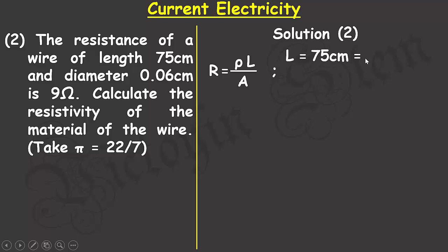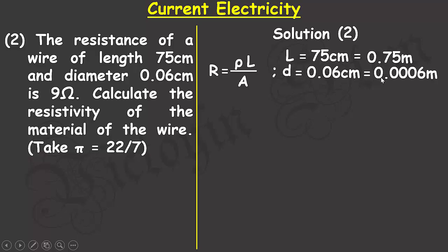Converting 75 centimeters to meters by dividing by 100 gives 0.75 meters. The diameter is given as 0.06 centimeters; converting to meters by dividing by 100 gives 0.0006 meters. The resistance of the wire is given as 9 ohms, and the resistivity is unknown.